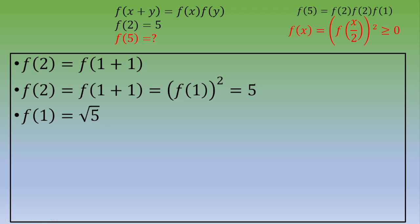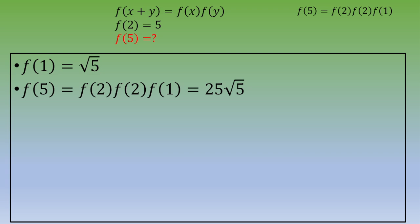So if we recap, f of 5 equals f of 2 times f of 2 times f of 1. f of 2 is 5, so this is 5 times 5, which is 25. And f of 1 is square root of 5. So the final answer is 25 square root of 5.